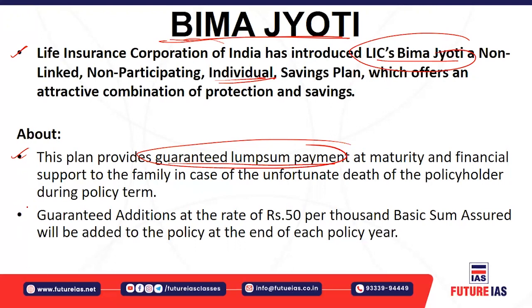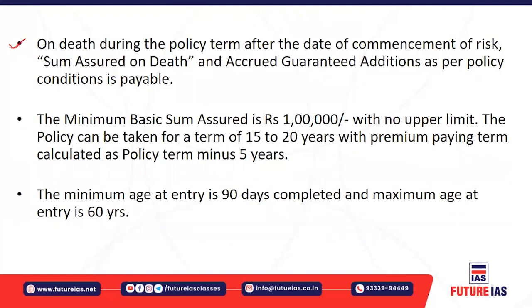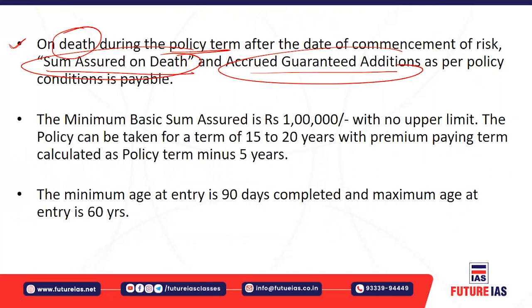The Bima Jyoti policy includes guaranteed additions at the rate of 50 rupees per thousand of basic sum assured, added at the end of each policy year, providing further benefits to policyholders. On the death of the policyholder during the policy term, the sum assured on death plus accrued guaranteed additions would be payable to the nominee. The minimum basic sum assured under this policy is one lakh rupees with no upper limit.